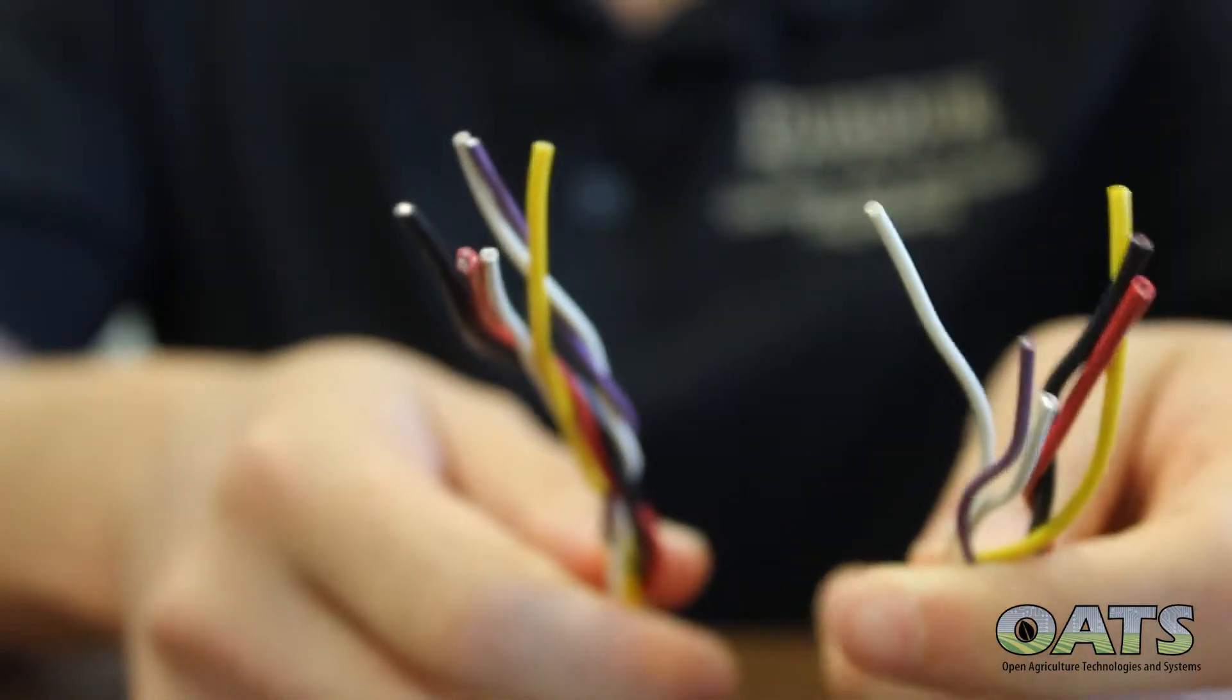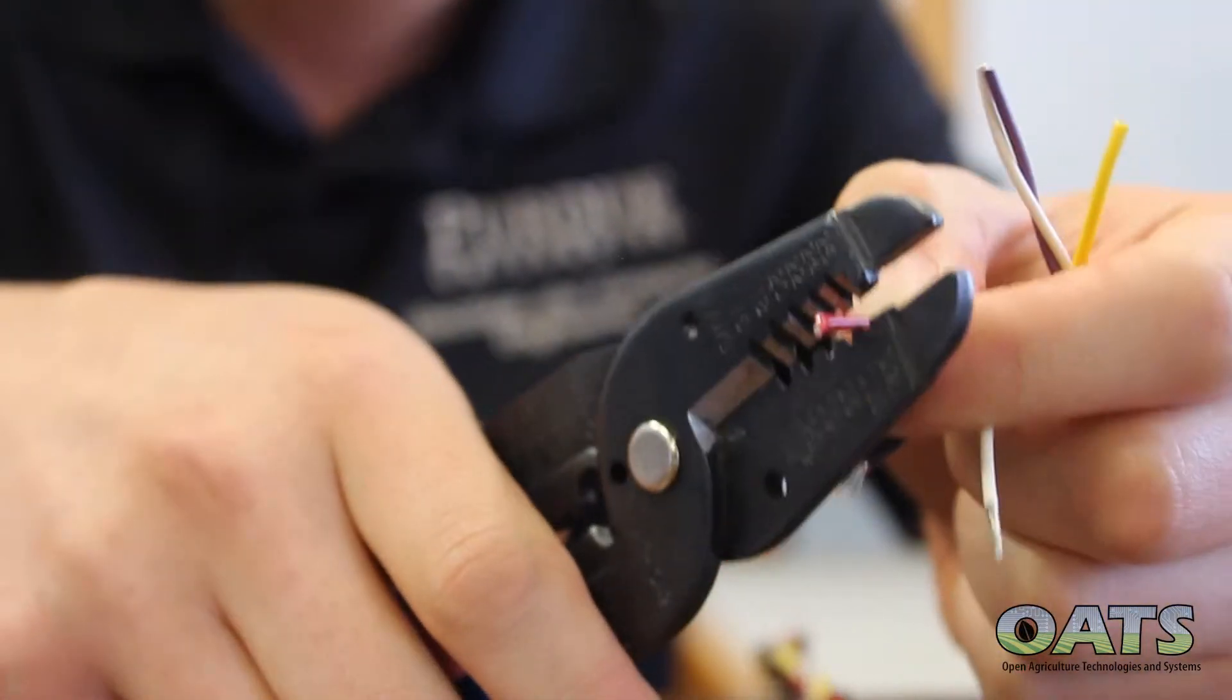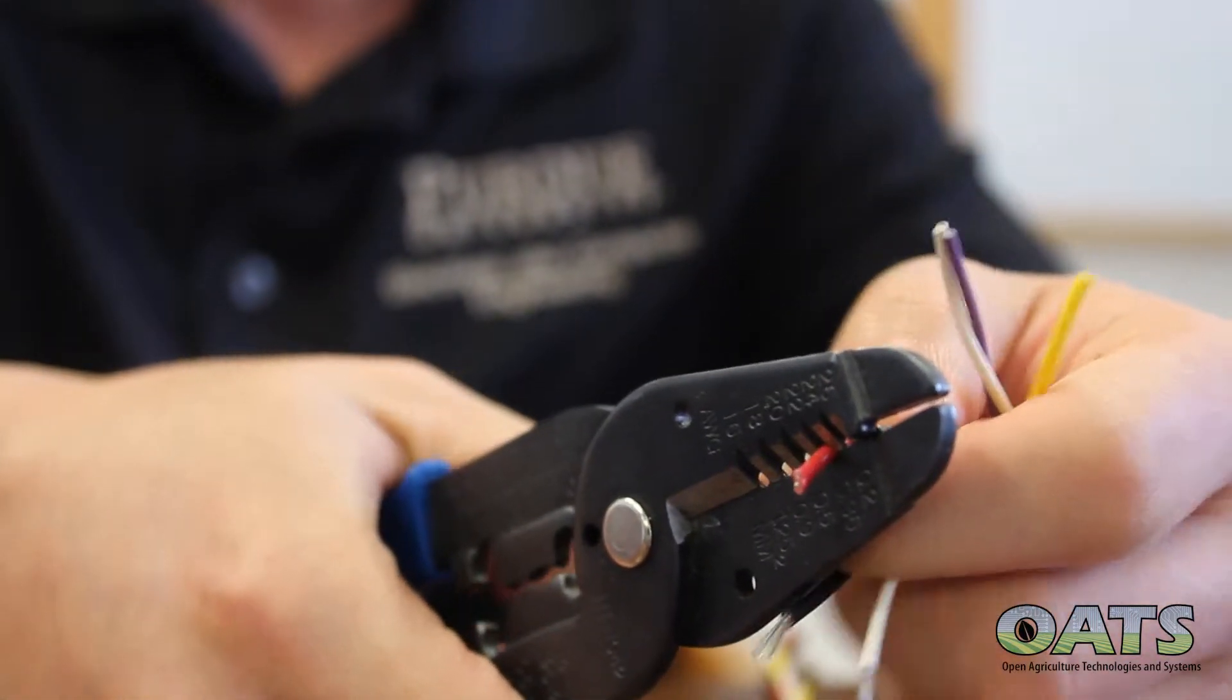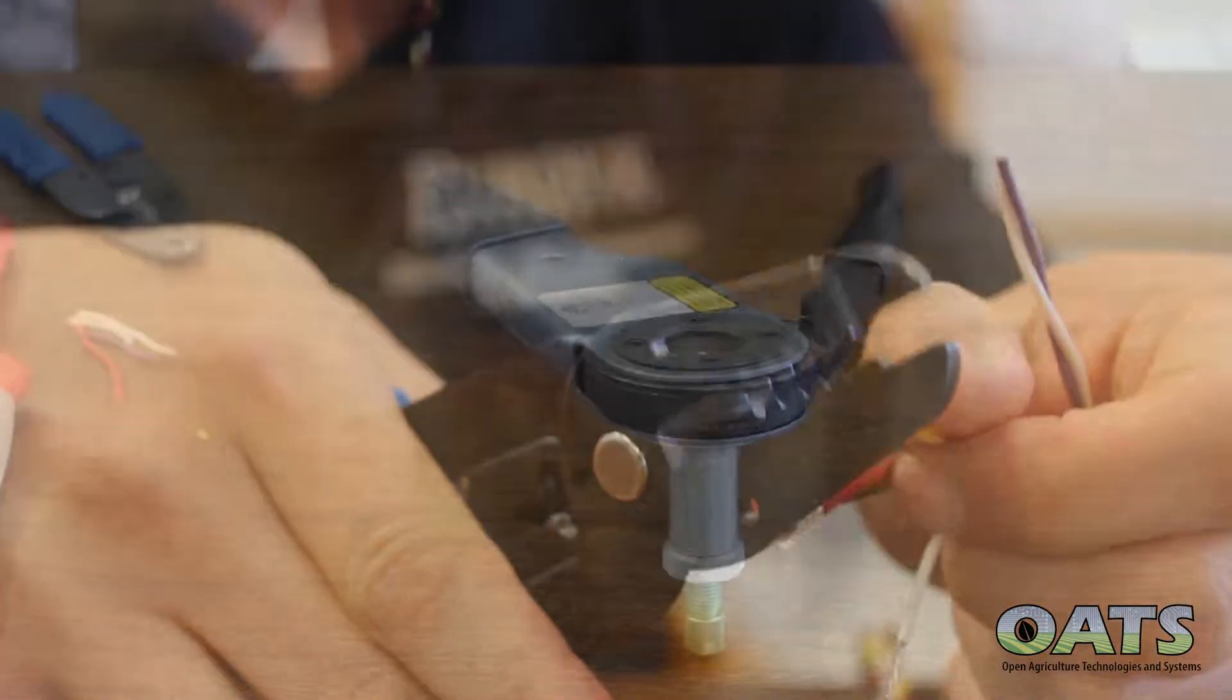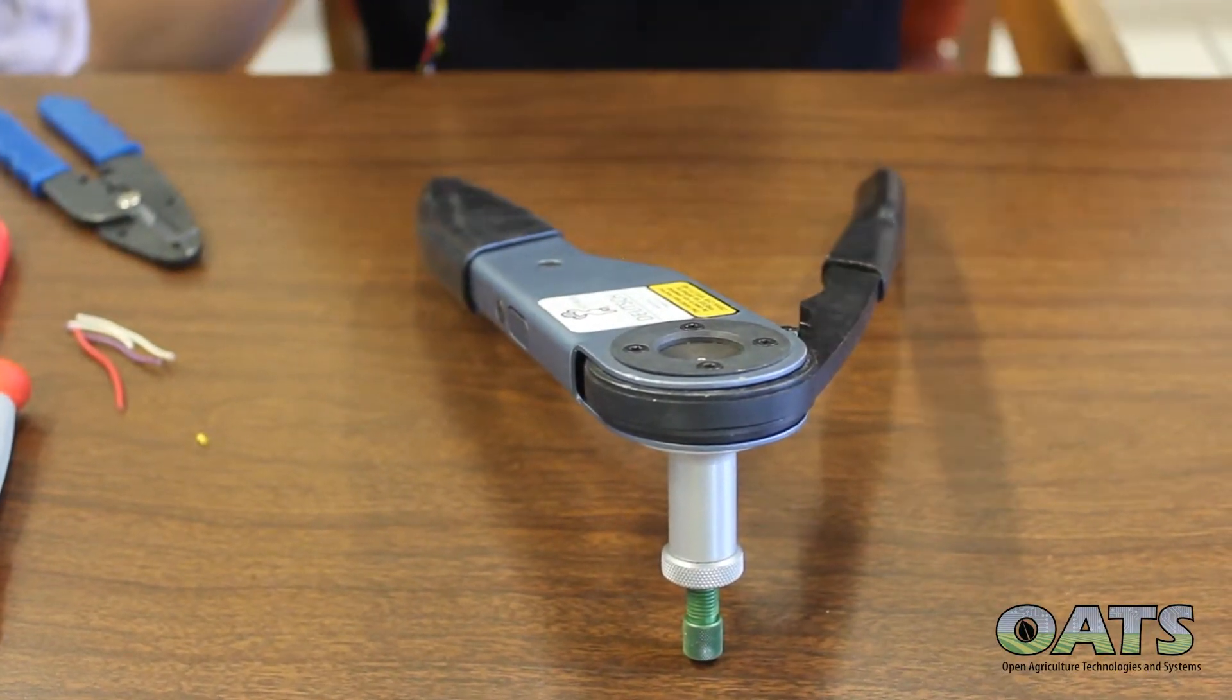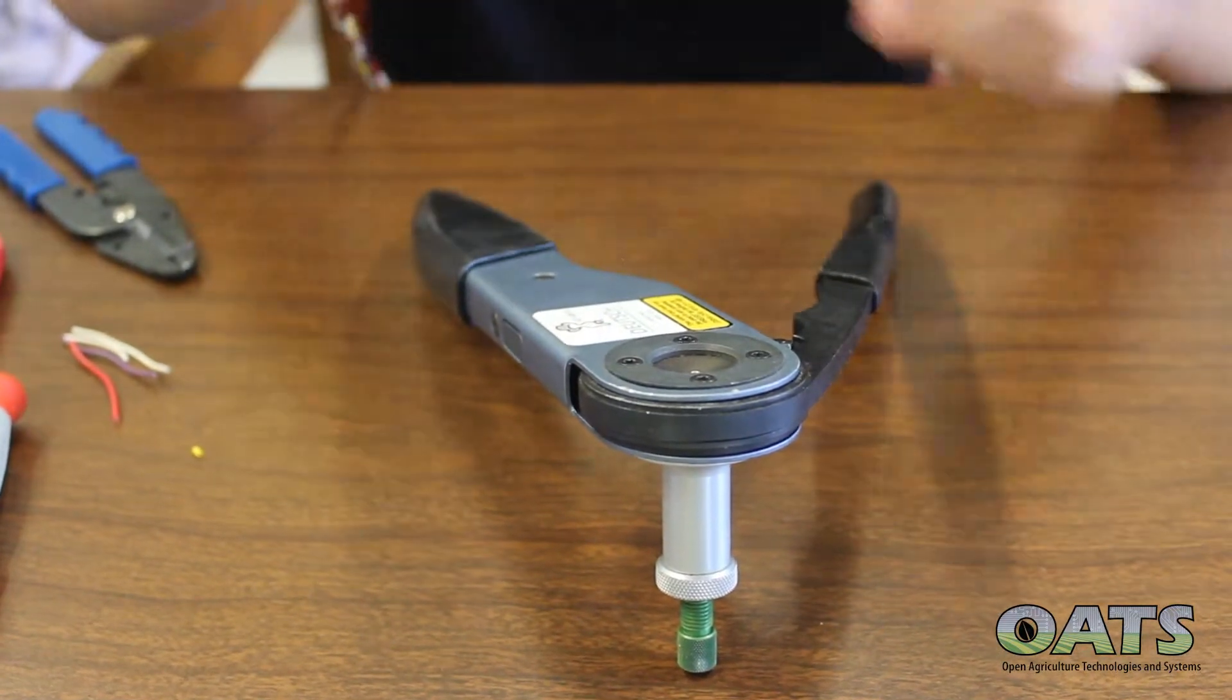And after you have these six wires, you will strip down both sides of all your wires by a quarter of an inch and then you will clamp on the isobus female pins onto these wires.